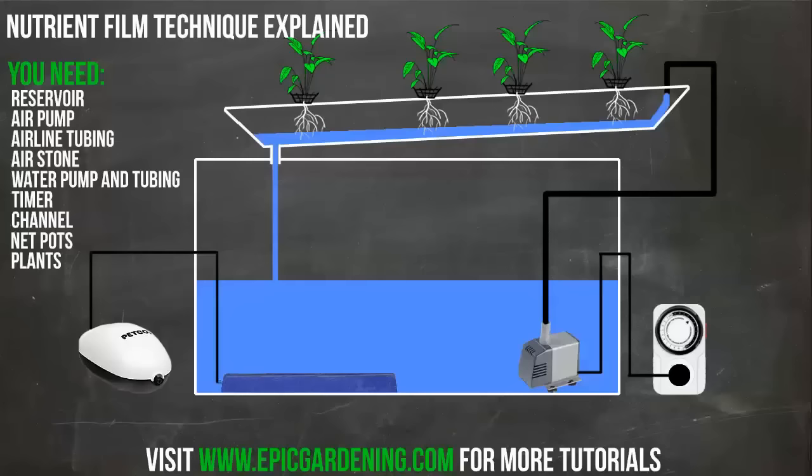So guys, that is nutrient film technique. It's pretty simple. It's not usually one that beginners start out with just because deep water culture is so much simpler to set up on both a conceptual level and a parts level. You don't need the tray whatsoever. But if you're looking for variety or to test something new and try something new out, maybe grow in a system that looks a little bit cooler, give this a try.